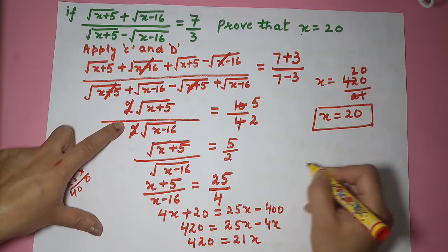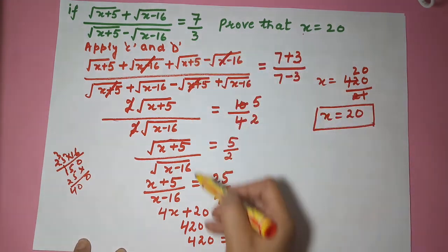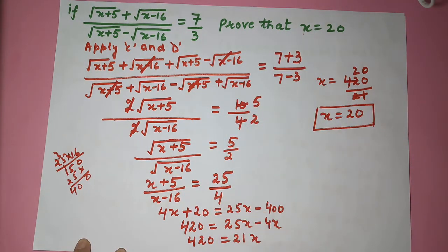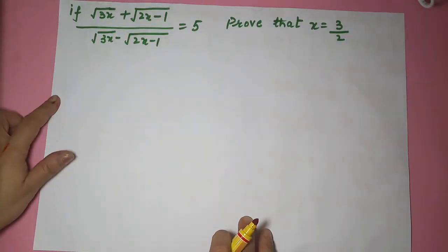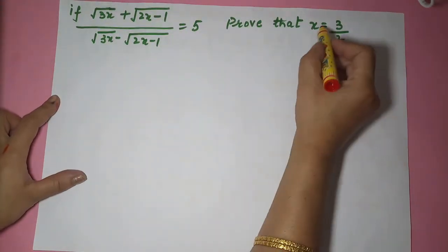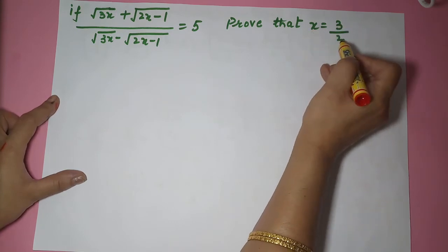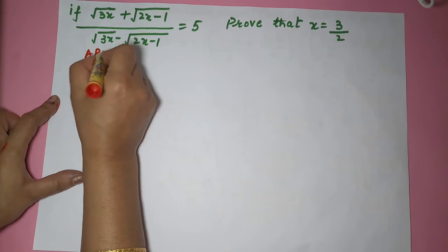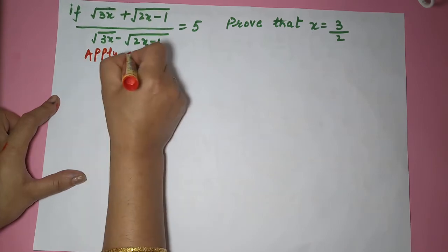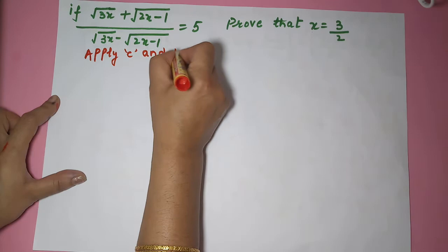Now you saw how simple it was — by applying the componendo and dividendo. Let's solve one more sum. Here we have to prove that the value of x is 3 by 2. So again we will apply componendo and dividendo.